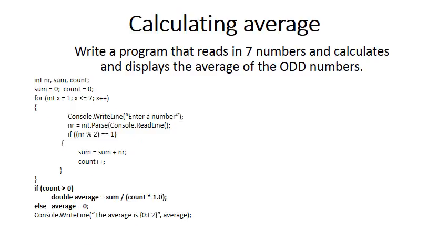We have one last complexity to consider, and that is what happens if the user gives you seven even numbers. Then by the time you reach the end of the for loop, count will be zero, and therefore you can't just simply say average is sum divided by count because you're not allowed to divide by zero in programming. So we need an additional if statement that says only do the calculation for average if count is greater than zero, otherwise average is simply zero.